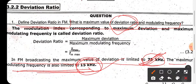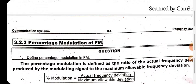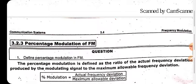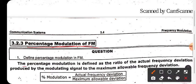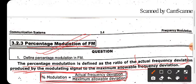The percentage modulation of FM is defined as the ratio of actual frequency deviation to the maximum allowable deviation. Percentage modulation equals actual frequency deviation upon maximum allowable deviation, multiplied accordingly. This gives us the percentage modulation of an FM wave.